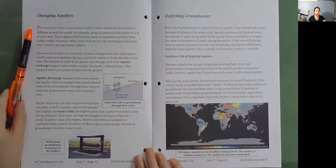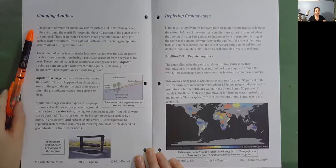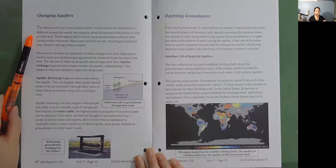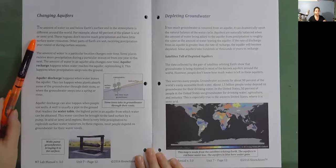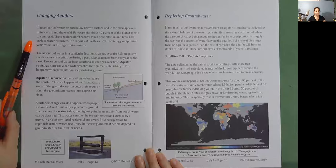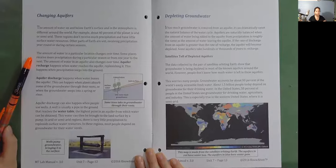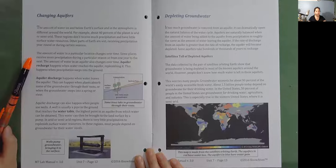The amount of water on and below Earth's surface and in the atmosphere is different around the world. For example, about 40% of the planet is arid or semi-arid. These regions don't receive much precipitation and have little surface water resources. Other parts of Earth are wet, receiving precipitation year-round or during certain seasons. The amount of water in a particular location changes over time. Some places receive more precipitation during a particular season or from one year to the next.